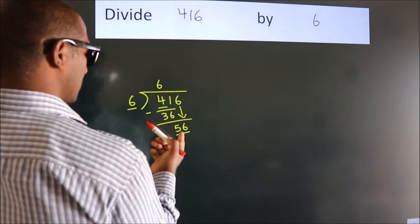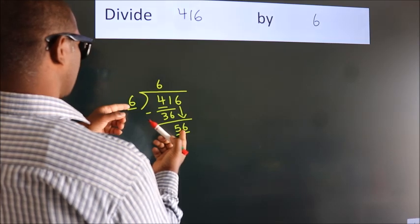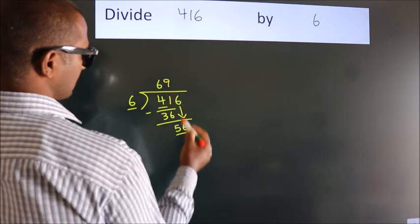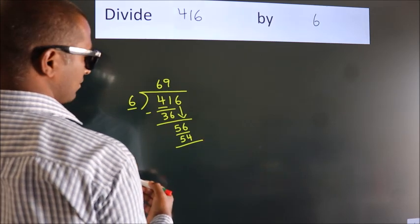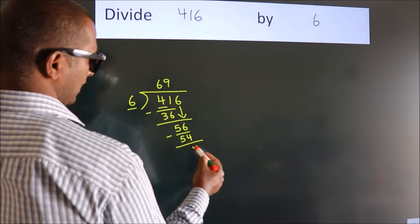A number close to 56 in the 6 table is 6 nines, 54. Now we subtract. We get 2.